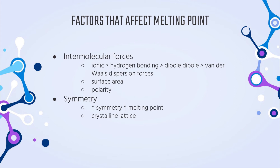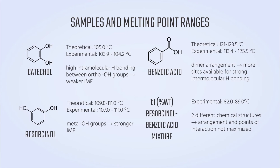Melting point is also influenced by symmetry: the more compact and symmetrical a compound is, the more efficiently it packs into a crystalline lattice, giving it a higher energy requirement for melting. For catechol and resorcinol, the experimental values are lower and have a wider range compared to theoretical values. Catechol and resorcinol are isomers. In catechol, the two OH groups have ortho positioning, while in resorcinol they have meta positioning. Because of the ortho positioning in catechol, there is a tendency for intramolecular H-bonding to be prioritized over intermolecular H-bonding, resulting in weaker intermolecular forces. In meta positioning, there is no such consequence, allowing for more intermolecular H-bonding.